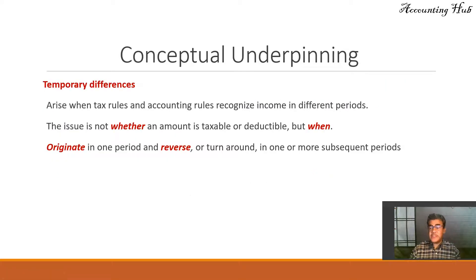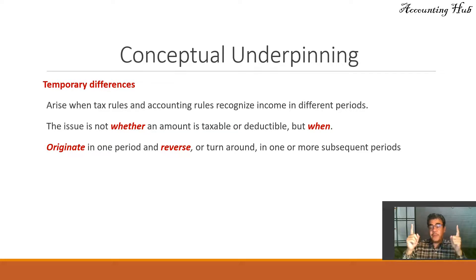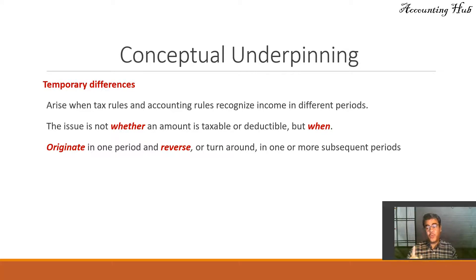We have temporary differences — that is when we have Deferred Tax Assets and Deferred Tax Liabilities. This occurs when tax rules and accounting rules recognize income in different periods. The income in the long run will be the same; however, they will differ in different periods, but when we combine them, they will be the same. So the issue is not whether an amount is taxable or deductible, but when we will tax it. It originates in one period and reverses in one or more subsequent periods.